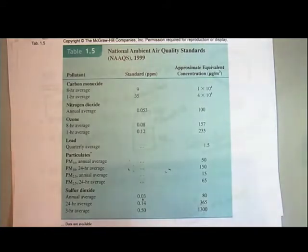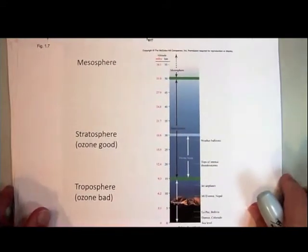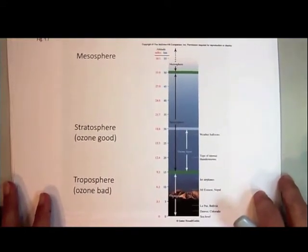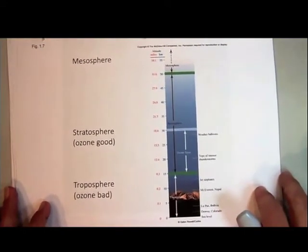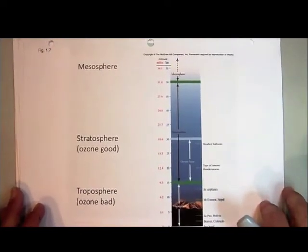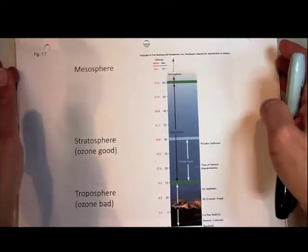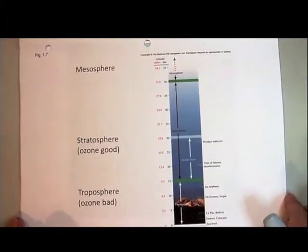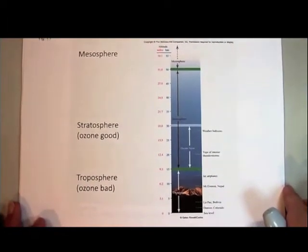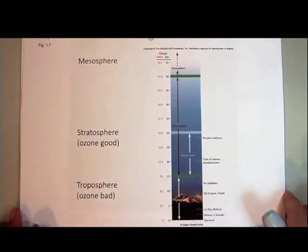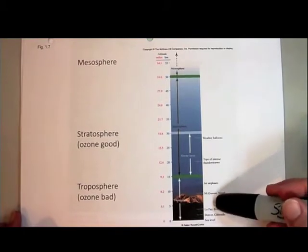First of all, we've got to get our heads straight about ozone. You've probably heard of ozone and problems with the ozone layer — the ozone's going away and that's a bad thing. And right now I'm telling you that having ozone is a bad thing. Well, it depends on where the ozone is. As you may be aware, the atmosphere is divided into different layers.